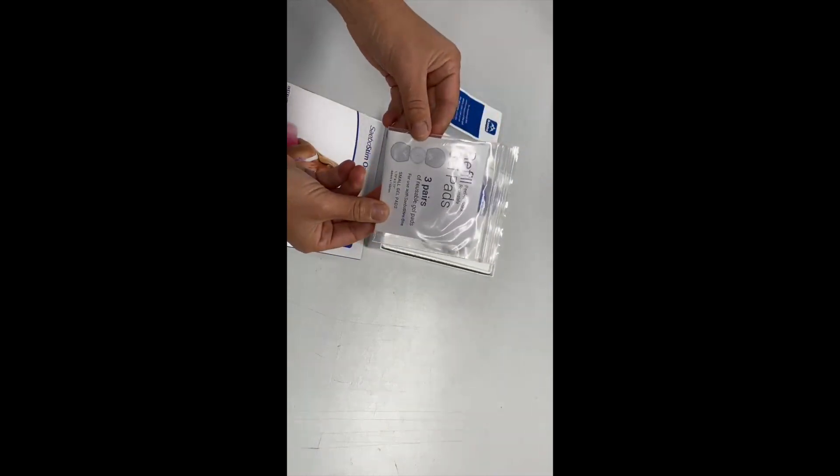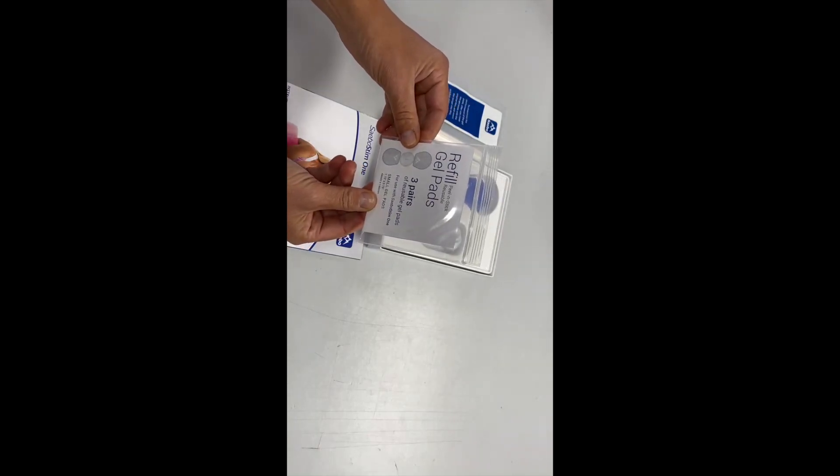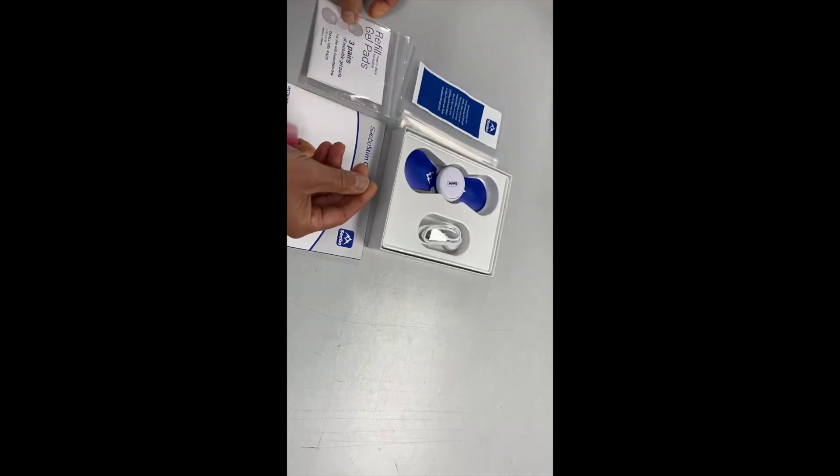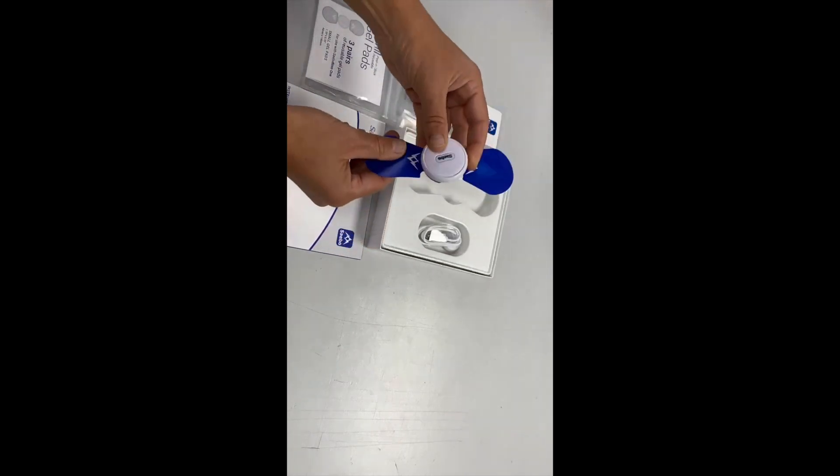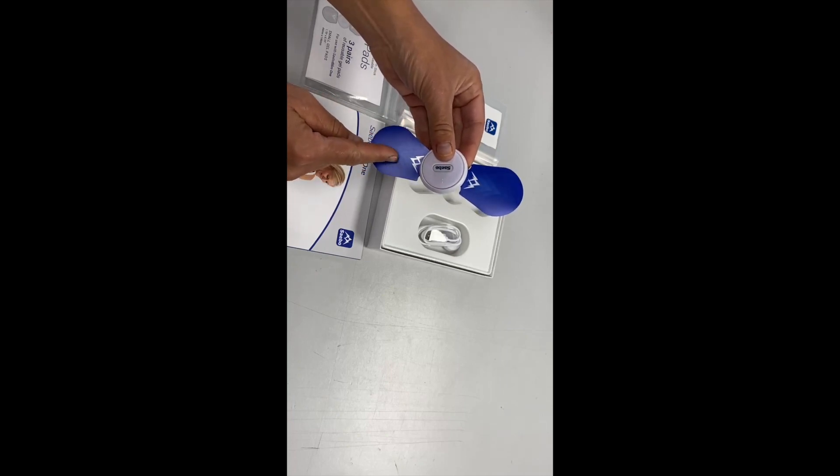You've got a pack of replacement gel pads. In this case these are small because it's a Sabo Stim 1 small. We've got the device itself: white power disk and the blue wings, which are small.